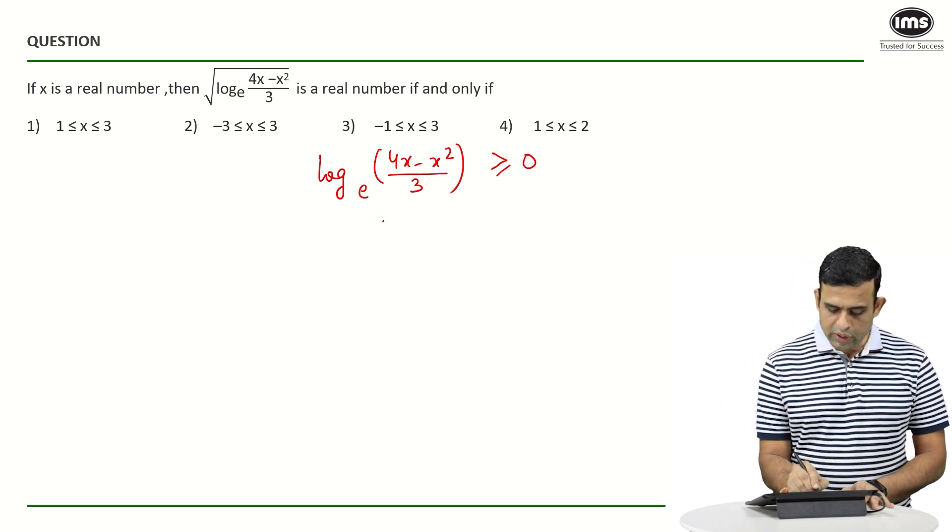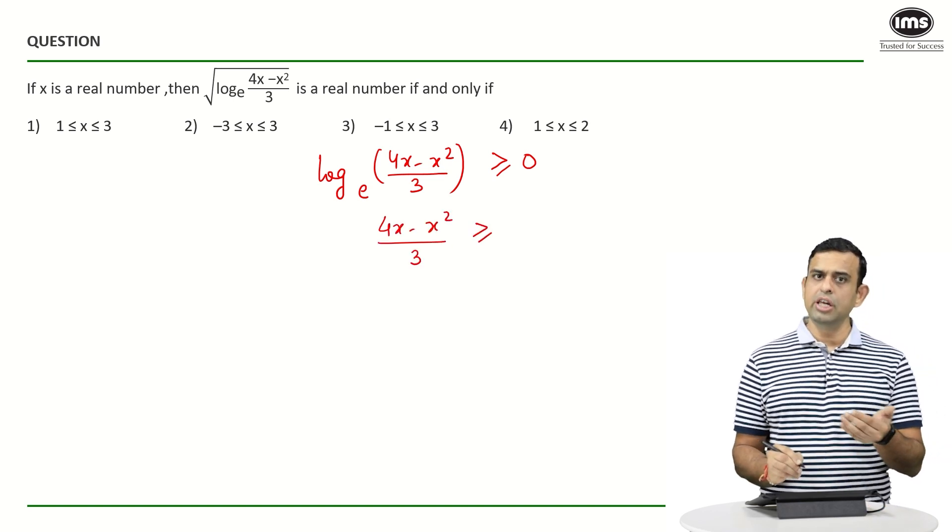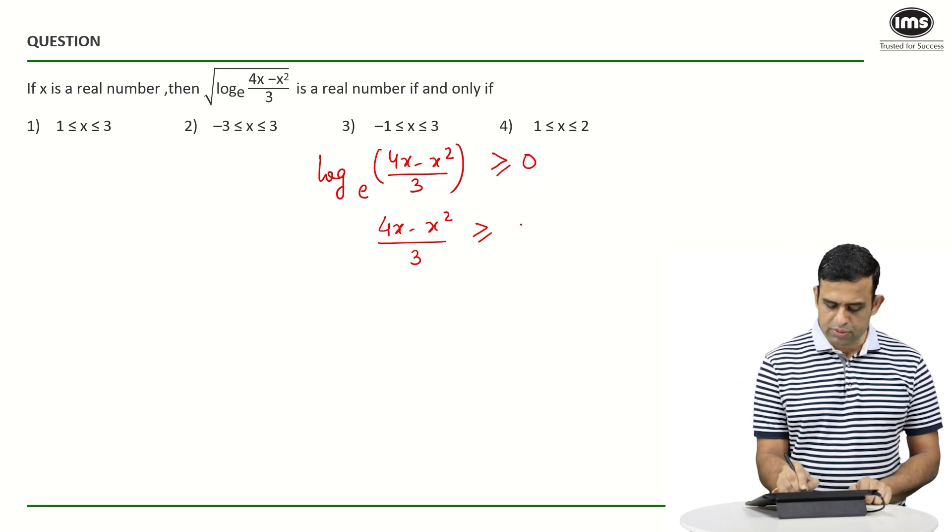So we can say (4x - x²)/3 should be more than equals to e^0, which basically becomes equals to 1.